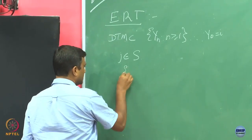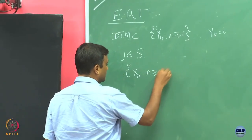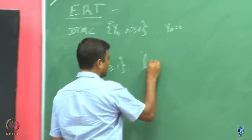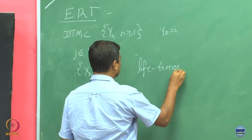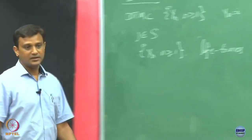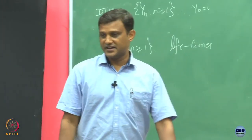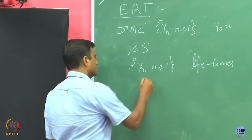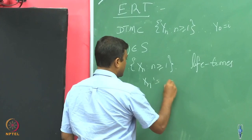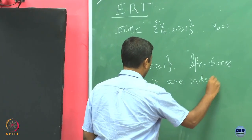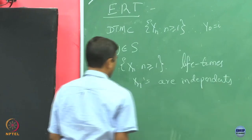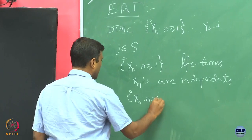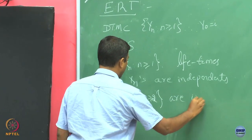We have this sequence of random numbers which we called as lifetimes. We said that these lifetimes are such that they are all going to be independent. The X_n's are independent, and then we said that if you look at X_n's for n greater than or equal to 2, they are IID — it is an IID process.